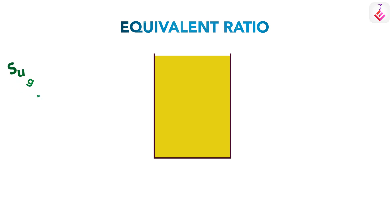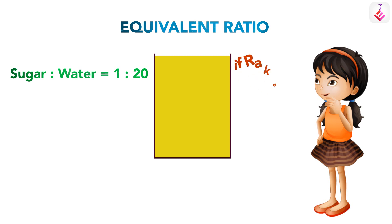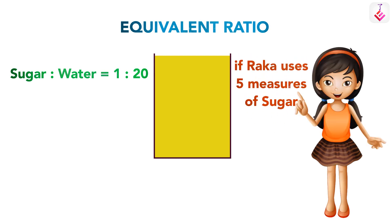Now let's learn about equivalent ratio. Here's a quick example. An orange squash is made using sugar and water in the ratio one to twenty. Now if Raka uses five measures of sugar, how many measures of water does she need?